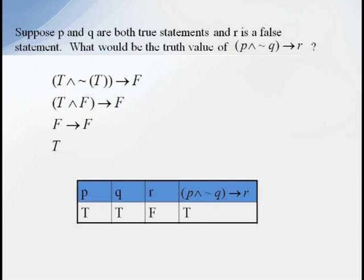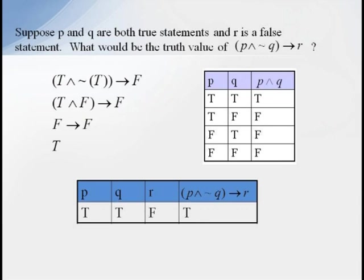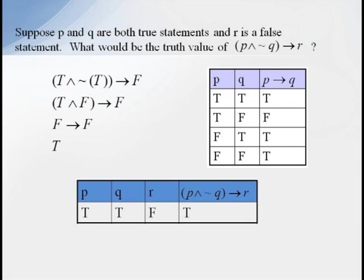For example, if we know P and Q are both true and R is false, what would be the truth value of IF P AND NOT Q THEN R? Replacing each variable with its value, we get IF T AND NOT T THEN F. NOT TRUE equals FALSE, and TRUE AND FALSE is going to give us a FALSE. So finally, we're left with FALSE implies FALSE, which is TRUE.